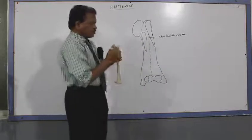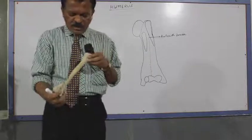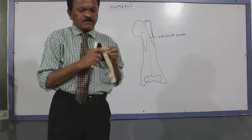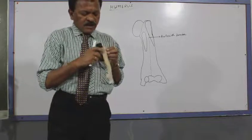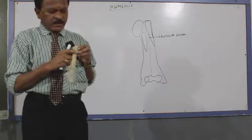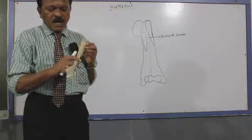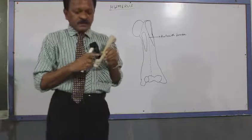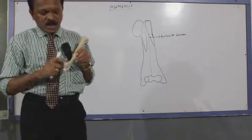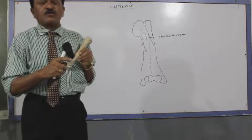The second is the lateral border. The lateral border begins at the posterior aspect of the greater tubercle and in the upper one third it is not prominent. It descends downwards, and in the lower one third it is very prominent. Here it is called the lateral supracondylar line, and it extends up to the lower end of the humerus.